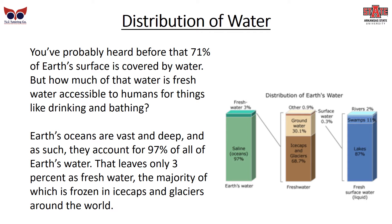Let's begin with the distribution of water. You've probably heard before that 71% of the Earth's surface is covered by water. But how much of that water is fresh water accessible to humans for things like drinking and bathing? Earth's oceans are vast and deep, and as such, they account for 97% of all of the Earth's water. That only leaves 3% as fresh water, the majority of which is frozen in ice caps and glaciers around the world.